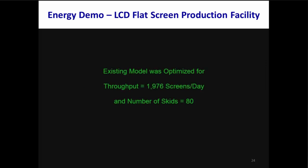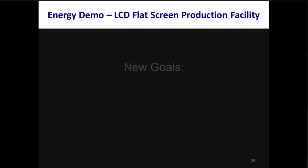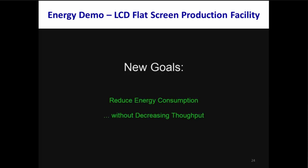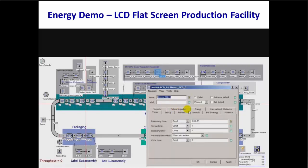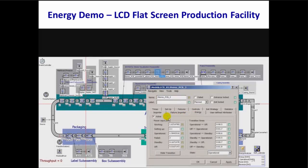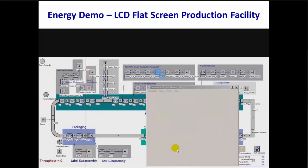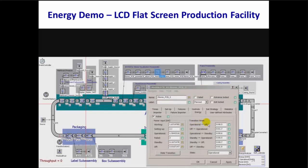Using PlantSimulation's powerful traditional modeling and analysis tools, the existing model was optimized for a maximum throughput of 1,976 screens per day. What-if experiments showed that a minimum of 80 skids was required to maintain that throughput. Since PlantSimulation can now model, analyze, and optimize energy consumption, we set new goals to reduce energy consumption without decreasing throughput. The first step is to specify power inputs in kilowatts in the energy tab of the stations for all states including working, setting up, operational, failed, standby, and off. We also specify the transition times between states.